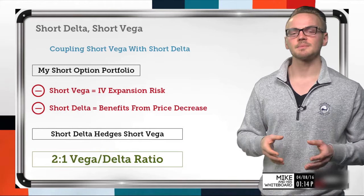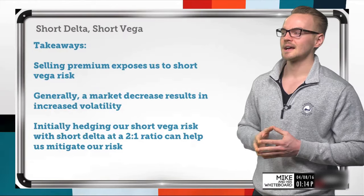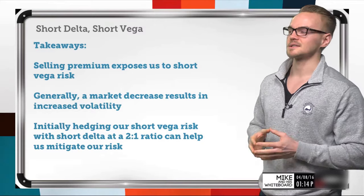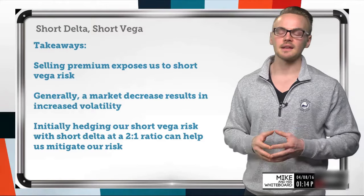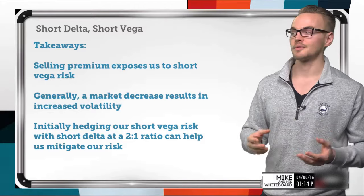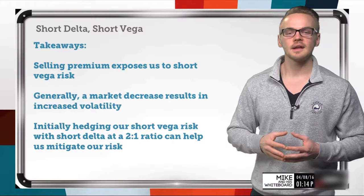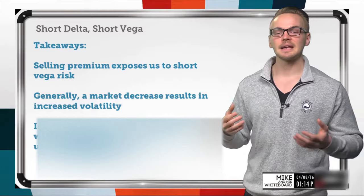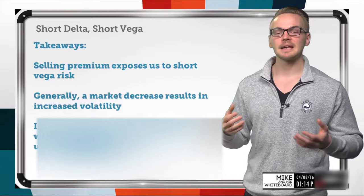Short delta and short vega — it's another way to think about the relationship between these two Greeks. Key takeaways: first, selling premium exposes us to short vega risk, because an implied volatility increase generally indicates rising option prices. Second, a market decrease can result in an increase in implied volatility, so coupling short vega with short delta is a great way to initially help defend your portfolio. Lastly, the two-to-one vega-to-delta ratio is a great starting point, but remember that delta changes as the market moves, so manage and adjust accordingly. Thanks for tuning in — I'm Mike. Follow me on Twitter at DoughTraderMike, and have a great weekend.